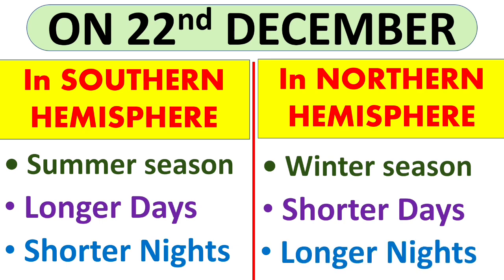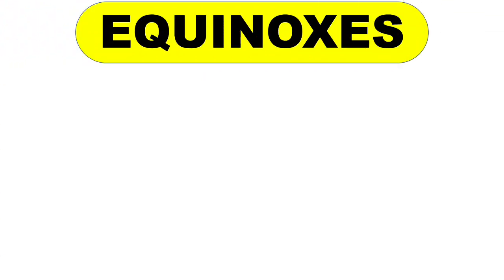Let us take an example of India and Australia. India is in the northern hemisphere whereas Australia is in the southern hemisphere. This is why when it is winter in India, Australia has summer.